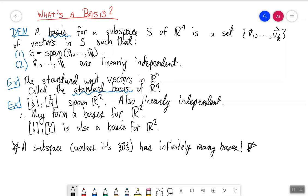Now, when I said unless it's zero, well, this guy here, that guy has no bases. Why is that? Well, because the only vector in that subspace is the zero vector, and any set containing the zero vector is linearly dependent. So it has no bases.